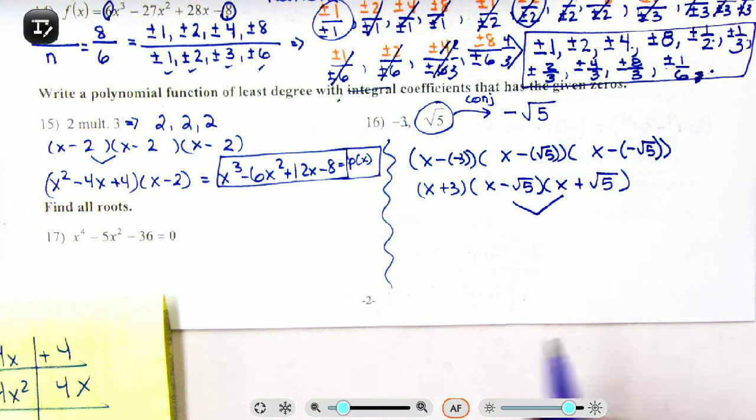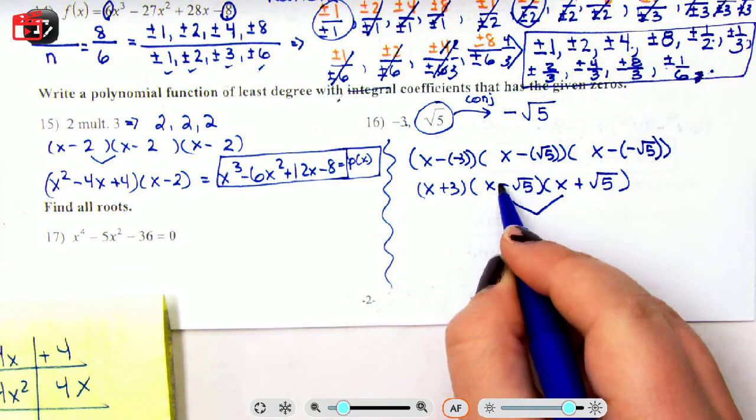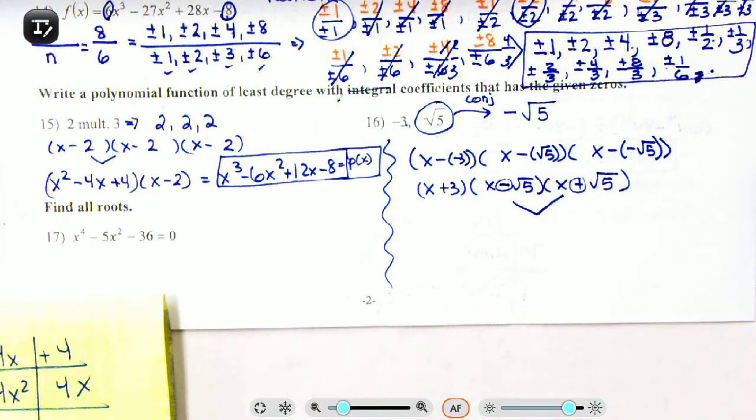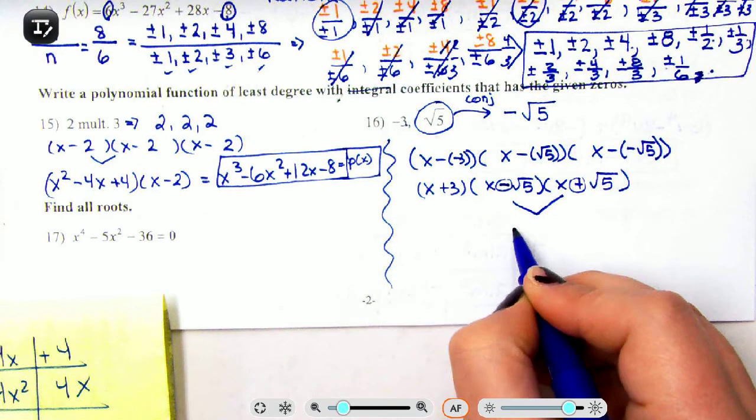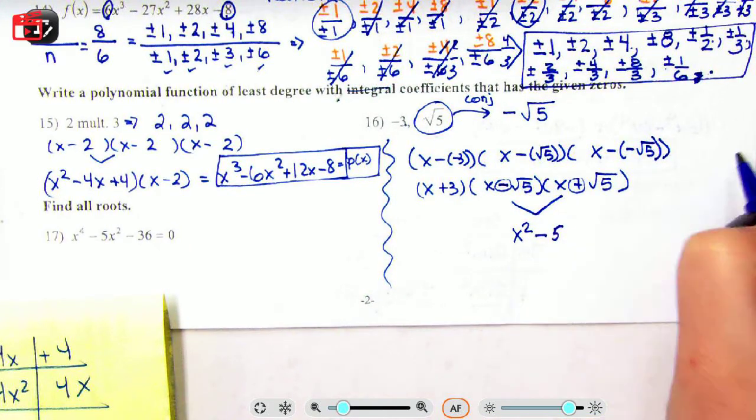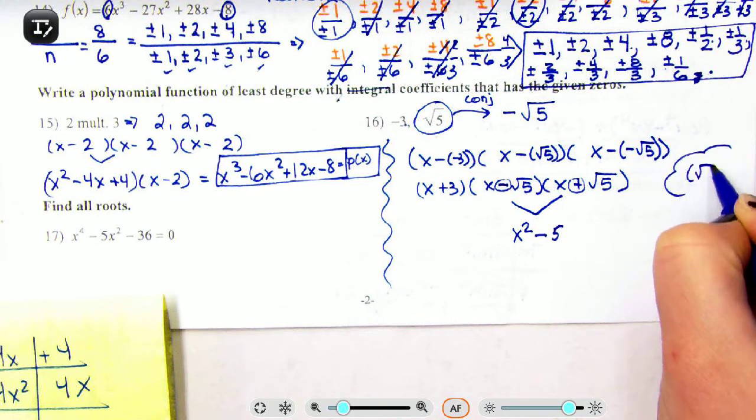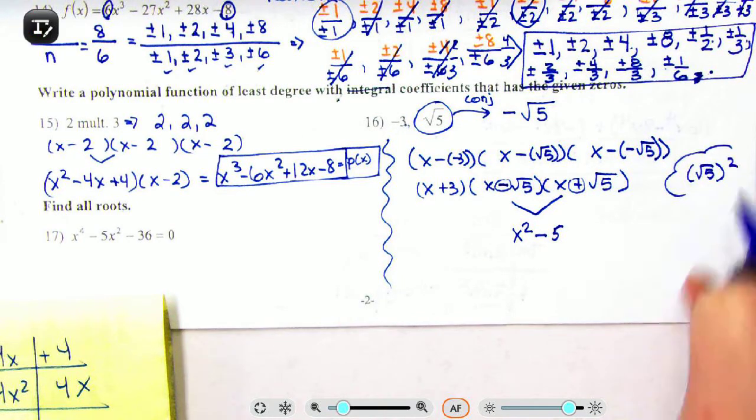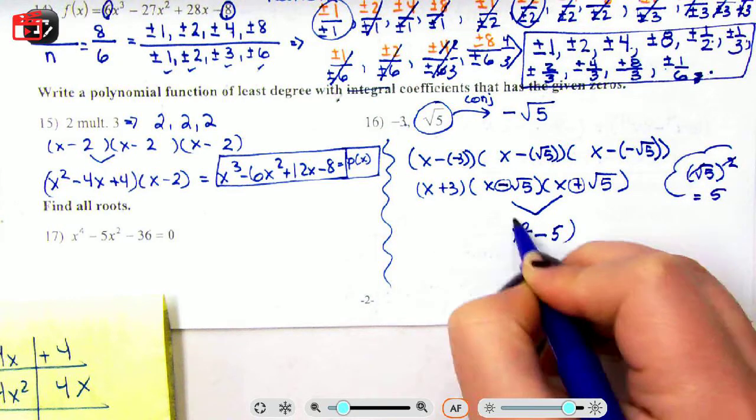My recommendation is always multiply these together so things will cancel. You should recognize that this is the difference of two squares, so this will be x² - 5, because it is (√5)² and that just is 5.